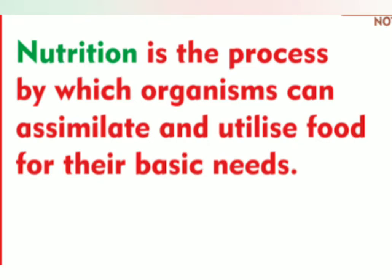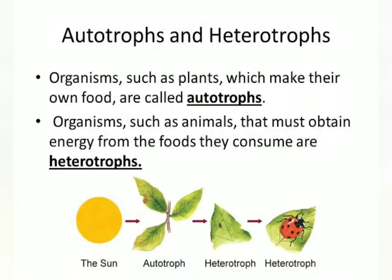Nutrition is the process of taking nutrients into our body and its utilization — that is the definition of nutrition. There are mainly two types of nutrition: one is called autotrophic nutrition and another one is called heterotrophic nutrition. Green plants make their own food by a process called photosynthesis; this is known as autotrophic nutrition, and the plants are called autotrophs or producers.